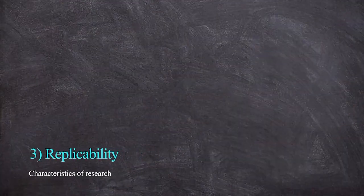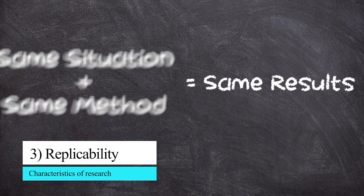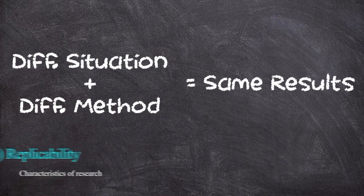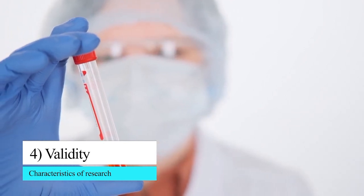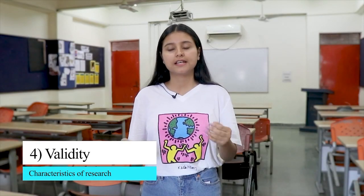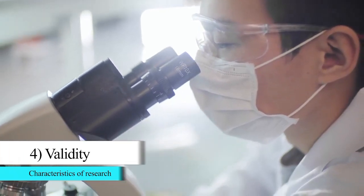The third characteristic is replicability, which is quite different. With a different situation and a different method, when your results are the same, that is replicability. The fourth characteristic of research is validity, which means being accurate — doing what you're supposed to do or intended to do. The procedures and tests you are doing should be accurate.